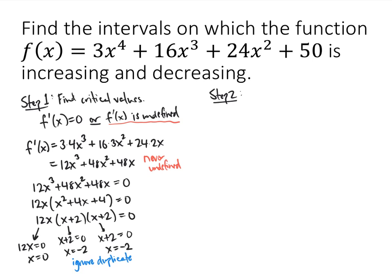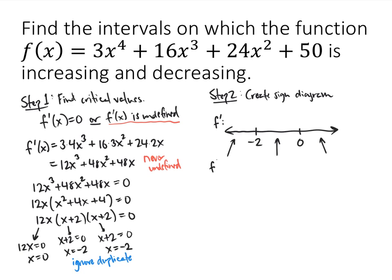Step 2 is to create a sign diagram. We start by drawing a number line and plotting all of the critical values we found — negative 2 and 0 — in the order they normally appear. We're interested in the sign of f prime between these critical values. We've got three regions: numbers less than negative 2, numbers between negative 2 and 0, and numbers greater than 0. The sign of f prime is consistent on each subinterval and can only change at the critical values.